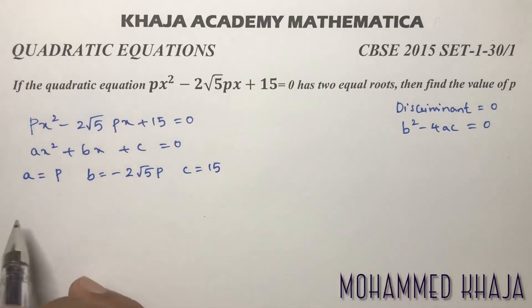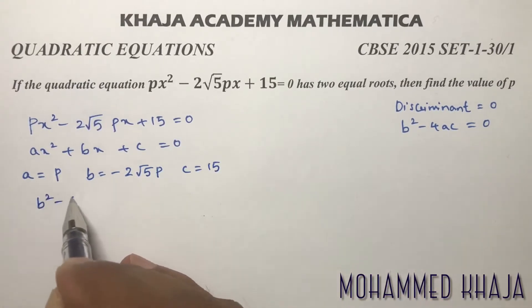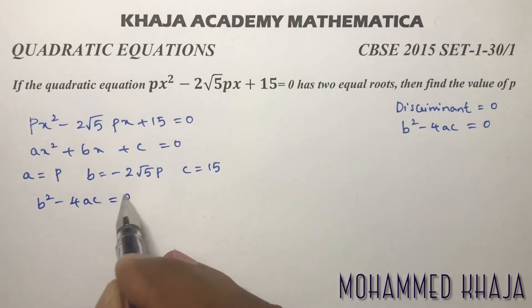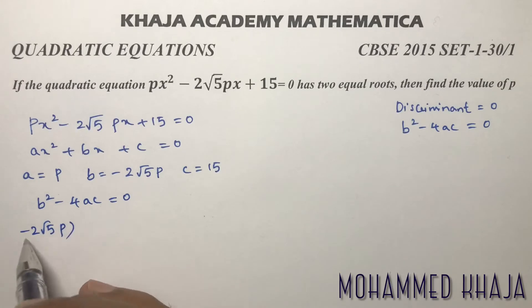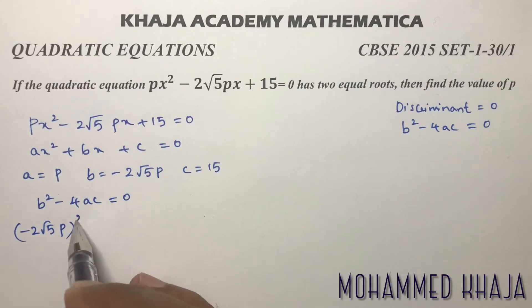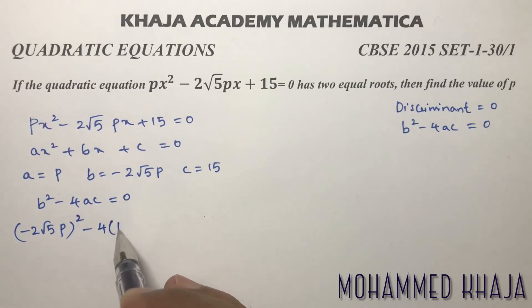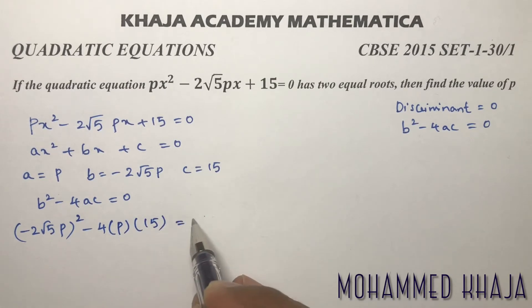So b² minus 4ac equals 0. Substituting: b is minus 2√5·p, whole squared, minus 4 times a which is p, times c which is 15, equals 0.